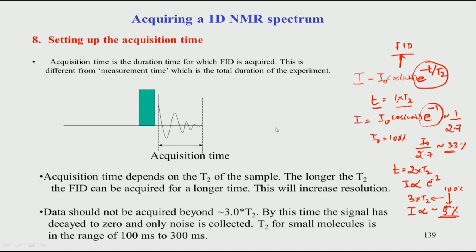At some point your signal is zero but the noise is still present, so signal-to-noise is zero. If you record the experiment for too long a time you accumulate noise but no signal, and the signal-to-noise goes down. This is a practical reason why many people come up with the argument that they are not getting any signal in their sample — they used a very wrong acquisition time, perhaps 10 times T2, without realizing it because T2 is something you should have only a rough idea of.